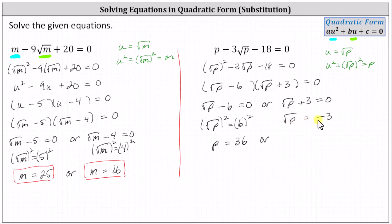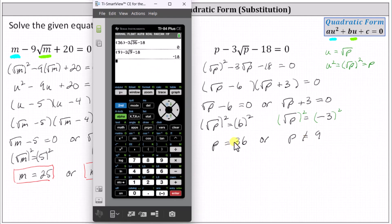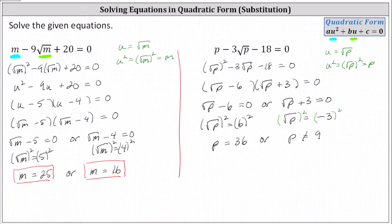However, if we don't catch this, we may continue and square both sides and get a second value for p, but it won't satisfy the original equation. If we did square both sides, we get p equals nine — the square of negative three is positive nine — but this is not going to satisfy the equation. Notice p equals 36 does satisfy the equation, but p equals nine does not. p equals nine is what we call an extraneous solution — it's when we make it algebraically, but it doesn't satisfy the equation. This shows why it's so important to verify a solution actually satisfies a given equation.